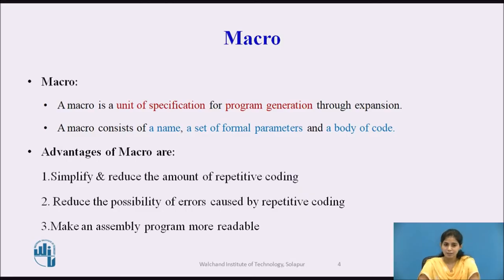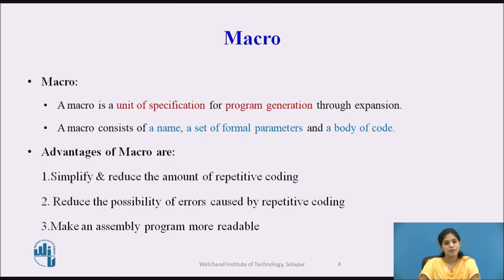The first advantage of the macro is to simplify and reduce the amount of repetitive coding. When we use a macro in the program, instead of writing the same code again and again, we define it as a macro and call it whenever required. The second advantage is it reduces the possibility of errors caused by repetitive coding. The third advantage is it makes an assembly program more readable.